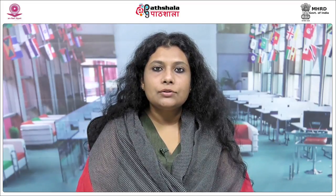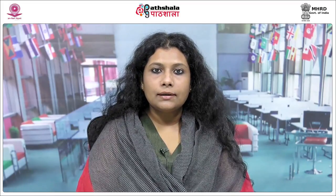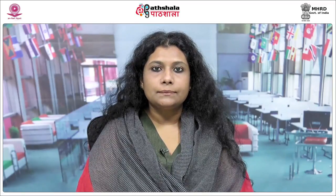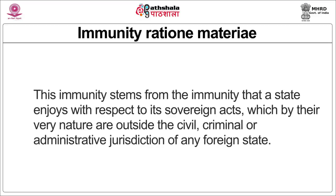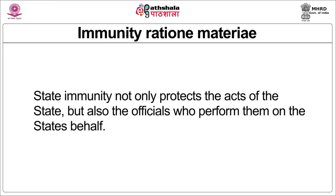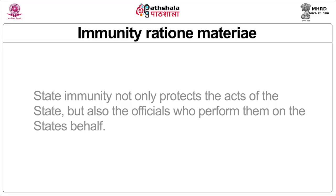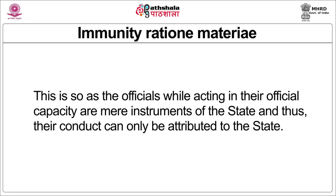The second kind is immunity ratione materiae. Immunity ratione materiae attaches to conduct carried out by an official on behalf of a state. This kind of immunity stems from the idea that a state enjoys immunity with respect to its sovereign acts, which are outside the civil, criminal, or administrative jurisdiction of any foreign state. State immunity therefore not only protects the acts of the state but also the officials who perform them on behalf of the state, so that officials acting in their official capacity are mere instruments of the state and are not hampered in the operation of their official functions.